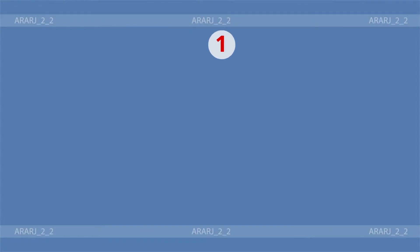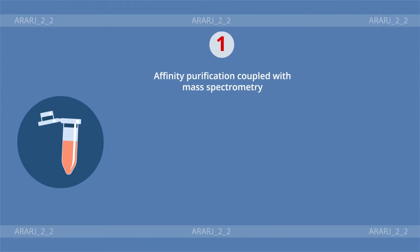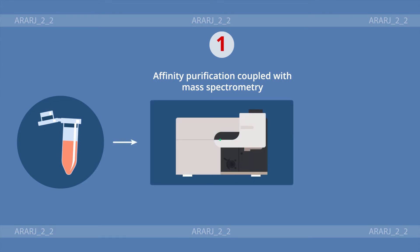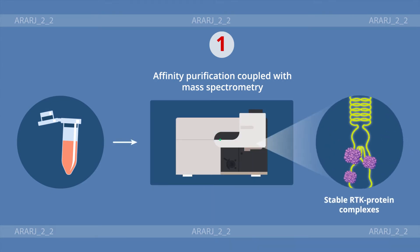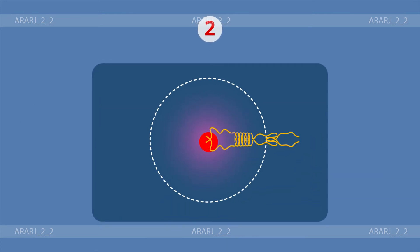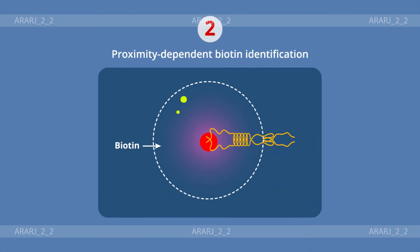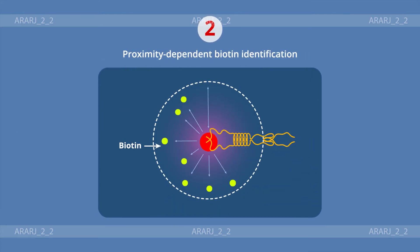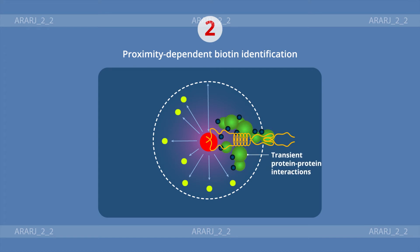First, they used affinity purification coupled with mass spectrometry to characterize stable RTK protein complexes. Next, they used proximity-dependent biotin identification to capture transient interactions.